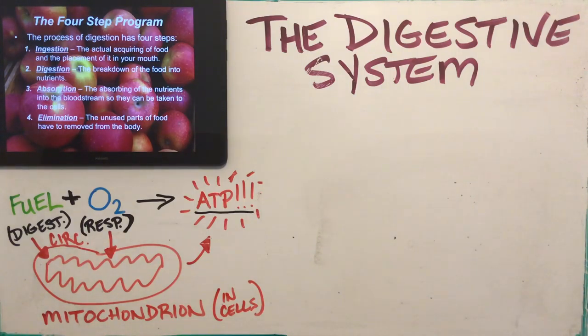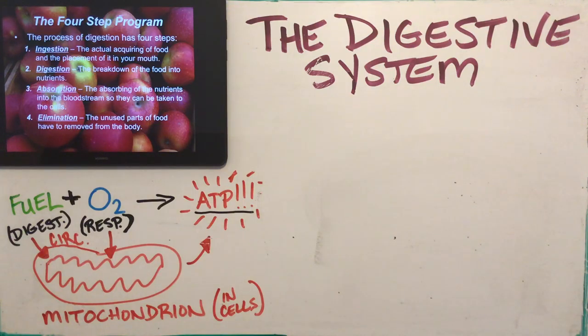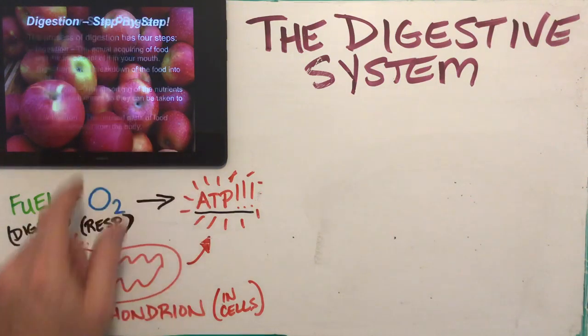Then there's elimination. Inside our food there are unused parts that we either can't digest or don't want in our body. We pack these and mix them with water — that's known as feces or poop. Elimination is getting rid of the stuff we can't digest or do not want in our body.